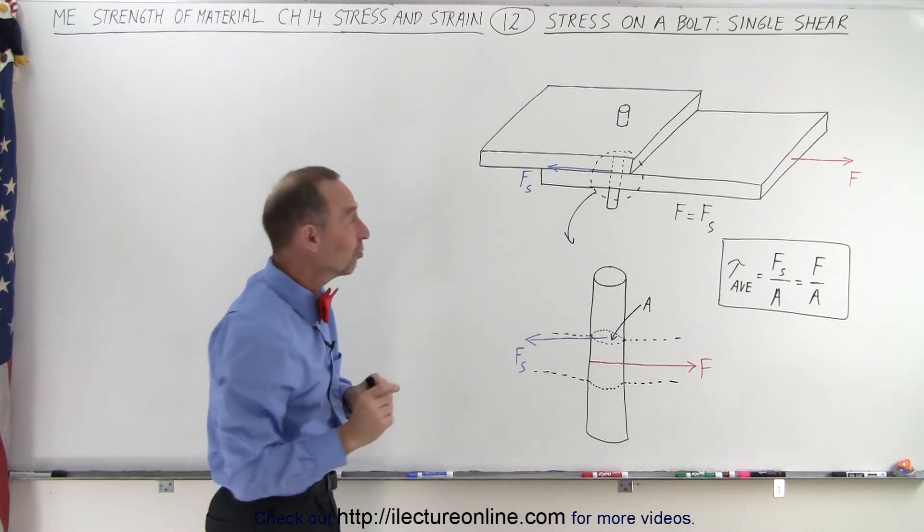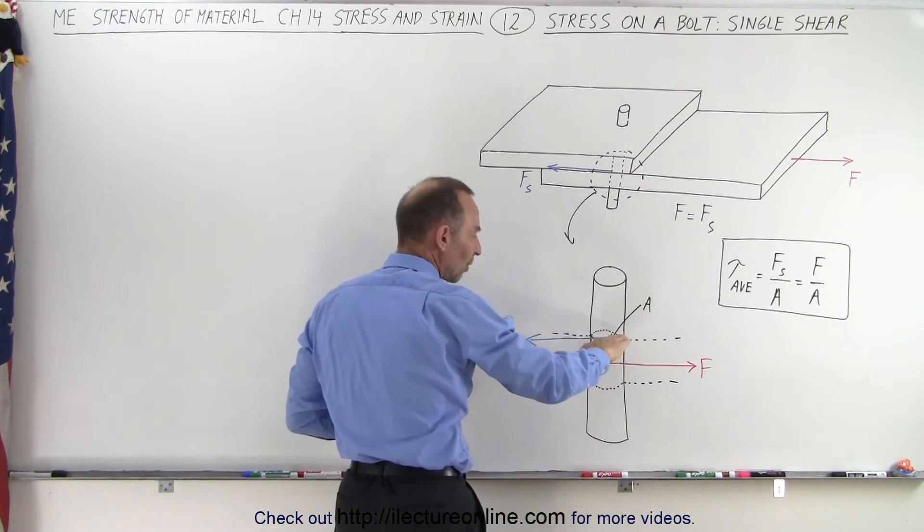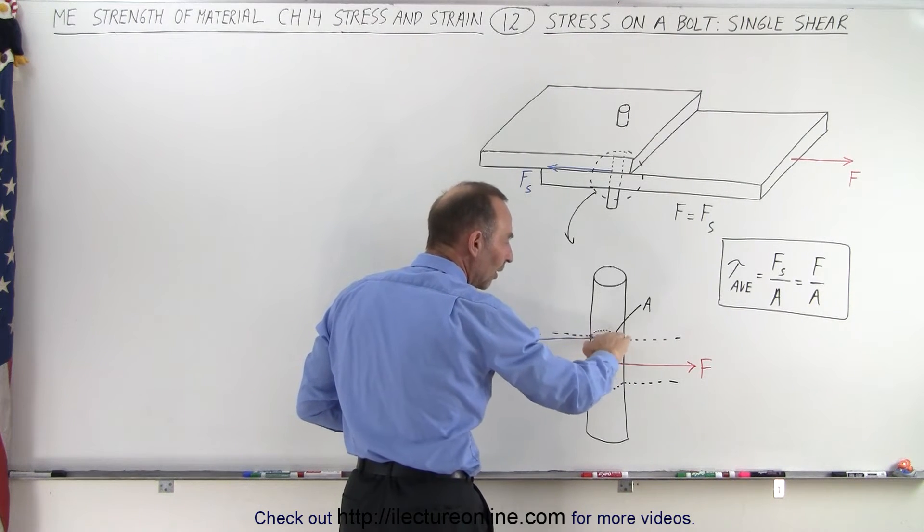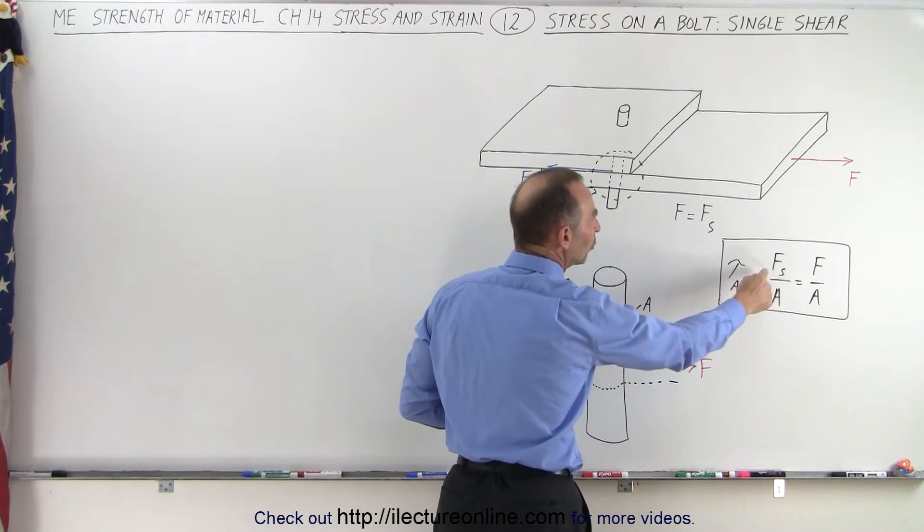Now since there's only a single bolt and there's only two planks right there, all the shear stress is associated with just this one cross-sectional area of the bolt. And so therefore, the average shear stress is equal to the shear force divided by the cross-sectional area of the bolt.